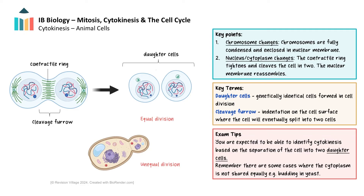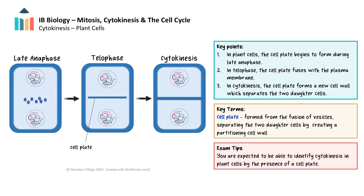Now let's take a look at cytokinesis in plant cells. Unlike animal cells, plant cells cannot form a cleavage furrow due to the rigidity of the cell wall. During anaphase, vesicles derived from the Golgi apparatus move to the center of the cell, where they coalesce at the former metaphase plate. These vesicles carry cell wall materials such as cellulose and pectin. The vesicles fuse to form a disc-like structure called the cell plate. The cell plate continues to grow outward and eventually fuses with the parent cell's plasma membrane during telophase, separating the cytoplasm into two distinct compartments. Once the cell plate is fully extended and new cell walls are formed, the two daughter cells are separated by a new fully functional cell wall. We can identify cytokinesis in plant cells by looking for the cell plate.